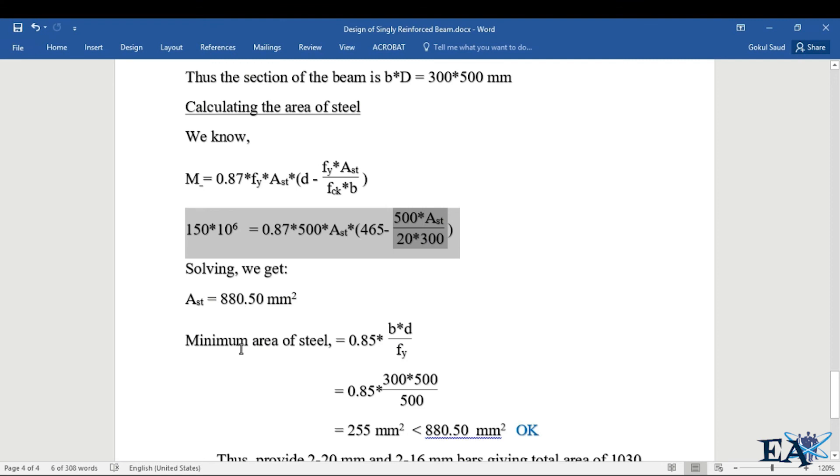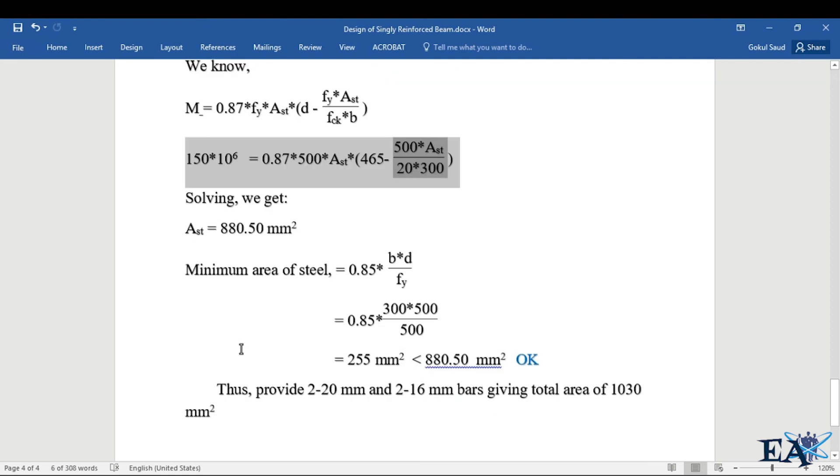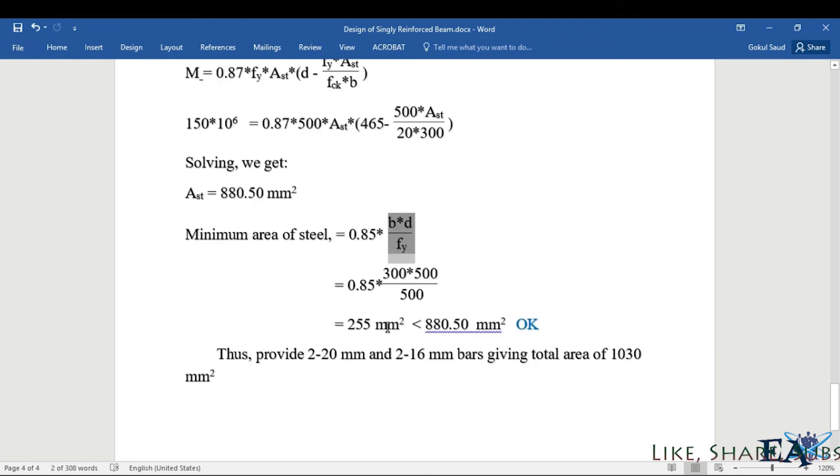The minimum area of steel required, as per IS 456-2000, says minimum area of steel in beam is 0.85×b×D/fy = 0.85×300×500/500 = 255 mm². Minimum area of steel is 255 mm² and the area of steel we have provided is 880.50 mm² as per our calculation. So we are fine with it.